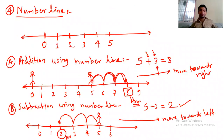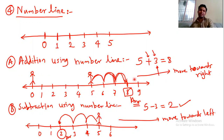When you add the numbers, you asked me 5 plus 3. So, go to 5 and add the numbers — that's why you move to the right-hand side. And how many jumps? 3 jumps: 1, 2, 3. So, the answer is 8. Like that you can get the answer very easily.